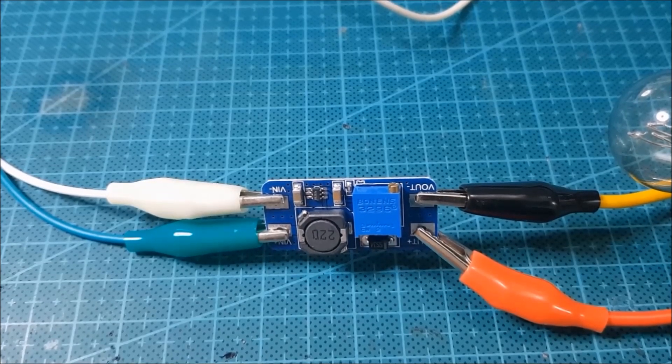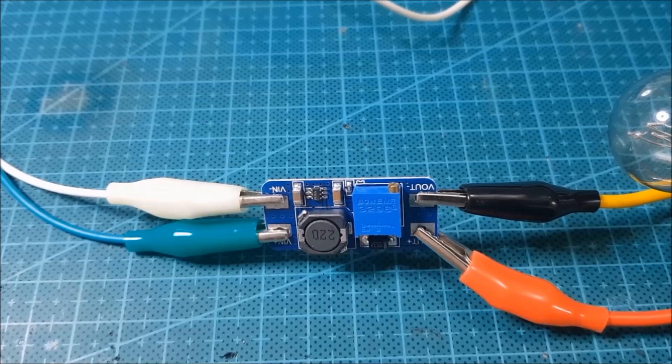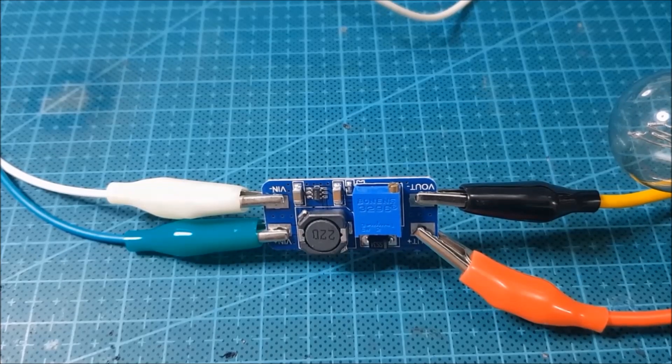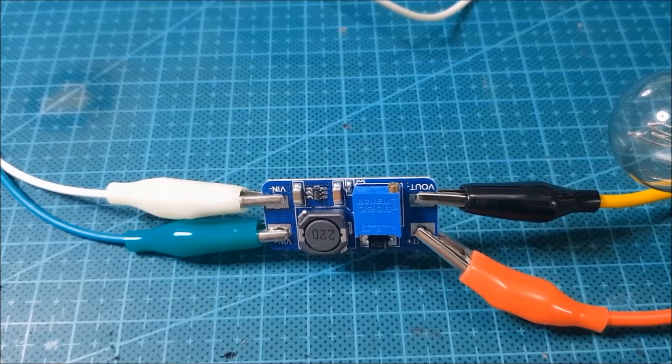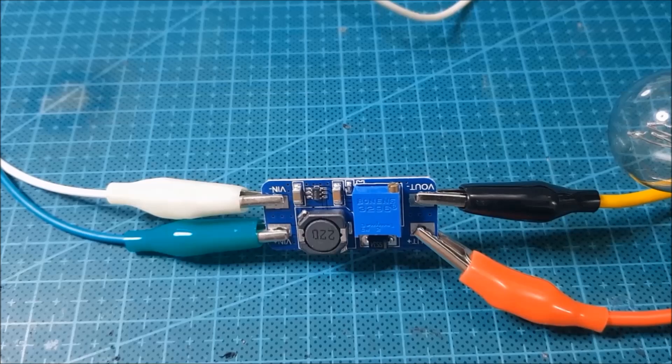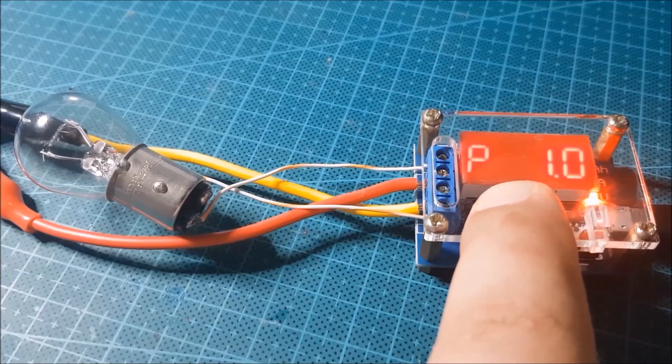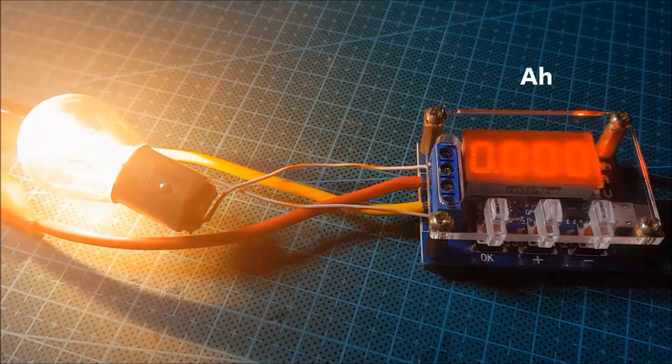The boost converter converts the super capacitor voltage to a stable 12.8 volts, so we can use all the energy stored in the capacitors. I connect a 12 volt, 6 watt lamp as a load in the output.